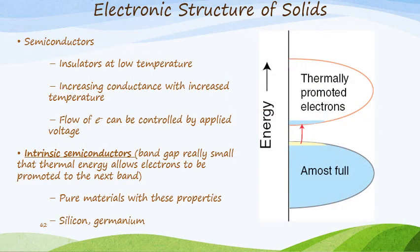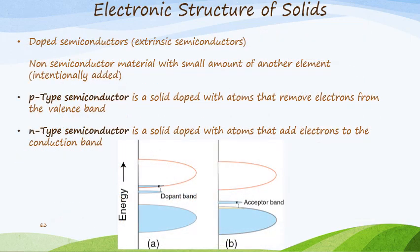We get semiconductors — these are insulators at low temperature that have increasing conductance with increasing temperature, so the flow of electrons can be controlled by an applied voltage. We have something called intrinsic semiconductors, where the band gap is so small that thermal energy allows the electrons to be promoted to the next band. Examples of these semiconductors are silicon and germanium. With temperature, we're able to promote the electrons up to the conduction band.